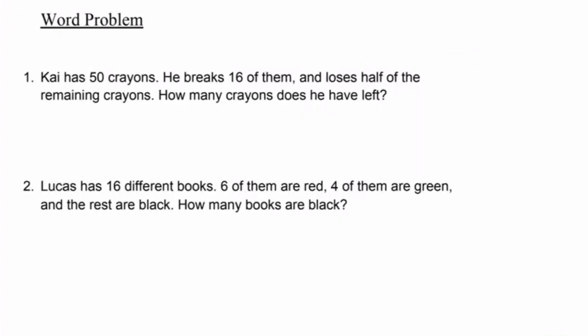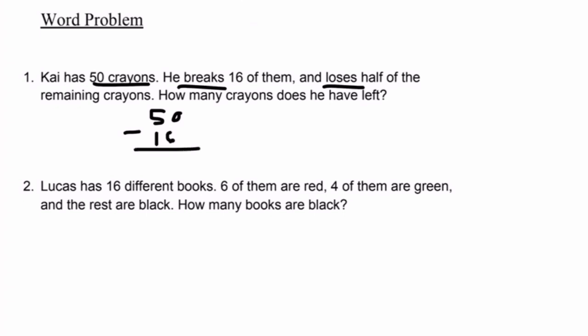Last topic is word problems, and it's asking us to solve the problems below. Number 1: Kai has 50 crayons. He breaks 16 of them and loses half of the remaining crayons. How many crayons does he have left? The keywords 'breaks' and 'loses' indicate this is a two-step problem. He starts with 50 crayons and breaks 16, so we subtract 16 from 50. 0 minus 6 — we borrow from the tens, 5 becomes 4, 0 becomes 10. 10 minus 6 equals 4, 4 minus 1 equals 3. Kai now has 34 crayons.